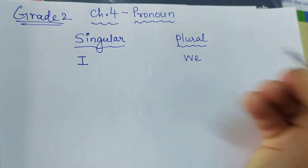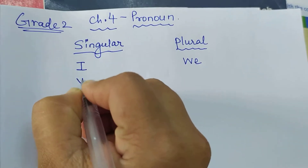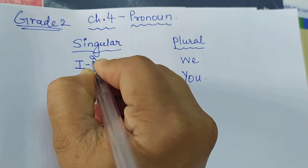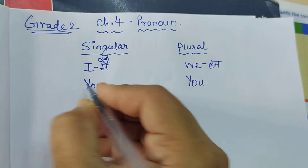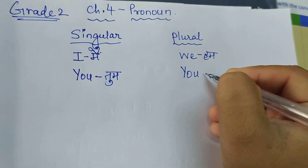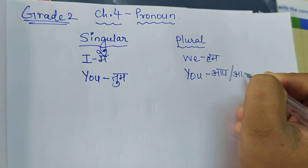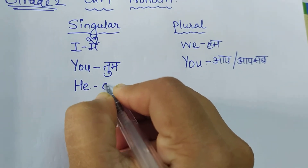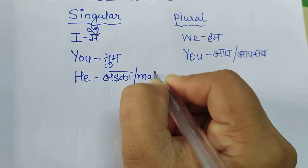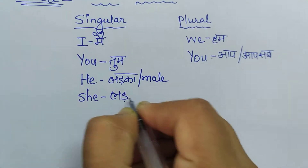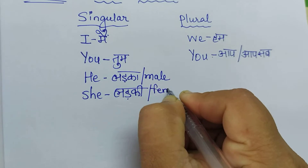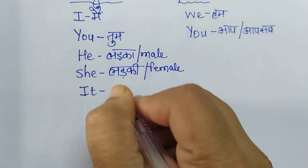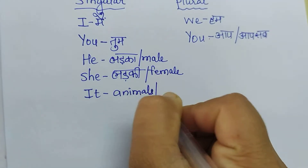You — 'you' means one person, and 'you' also means many people, like 'aap.' I means 'main,' we means 'hum.' He is used for a boy or male gender. She is used for a girl or female gender. And 'it' is used for neuter gender — neutral gender means either animals or non-living things.